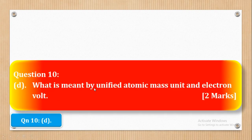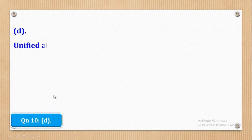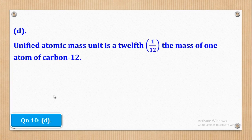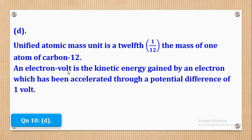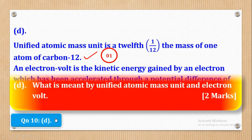So now we shall go to question 10 part D. Part D says that what is meant by unified atomic mass unit and electron volt. So we shall say that unified atomic mass unit is a twelfth the mass of one atom of carbon-12. So basically that's the definition of unified atomic mass unit. Then for electron volt we shall say an electron volt is the kinetic energy gained by an electron which has been accelerated through a potential difference of one volt. So basically that's the difference and the marks will be one mark for the unified atomic mass unit and also one mark for electron volt. So basically that's what they wanted in part D.